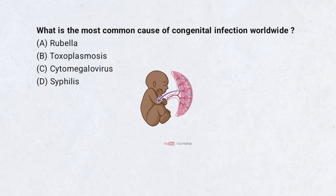What is the most common cause of congenital infection worldwide? A. Rubella. B. Toxoplasmosis. C. Cytomegalovirus. D. Syphilis. Correct answer: C. Cytomegalovirus.